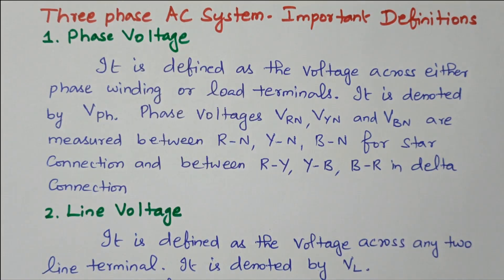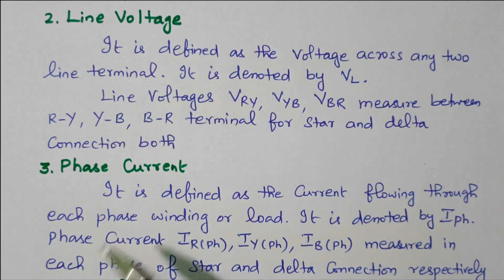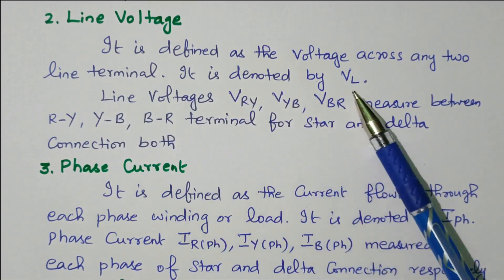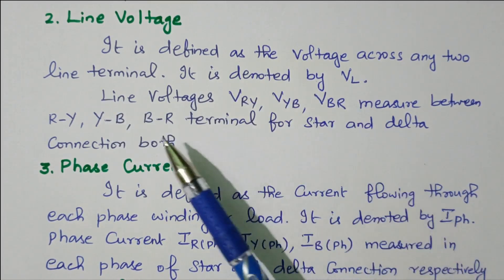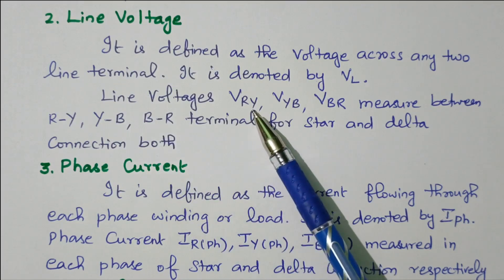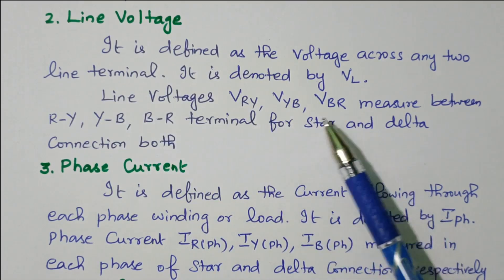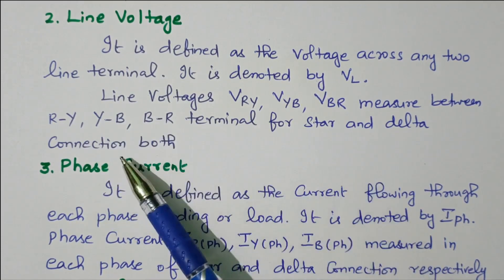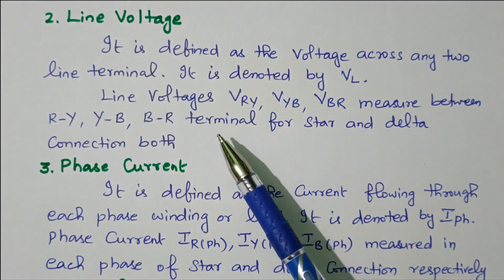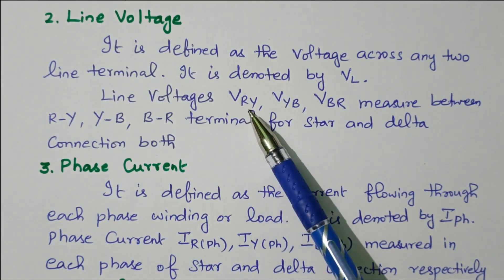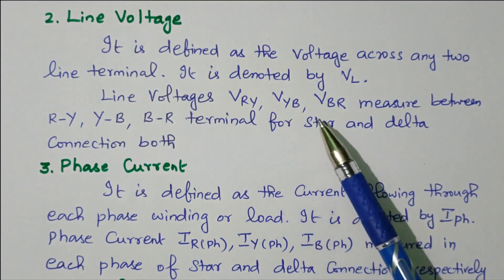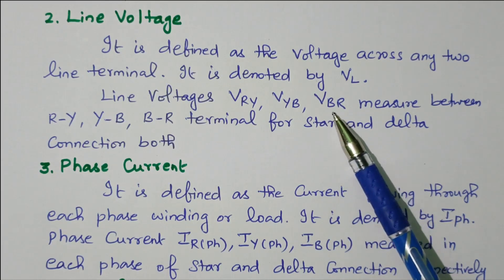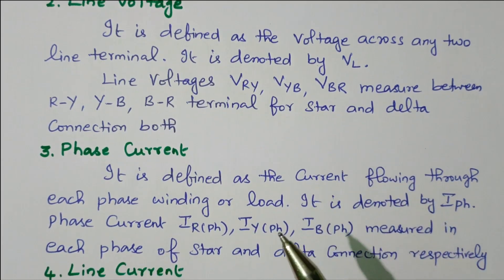Line voltage is defined as the voltage across any two line terminals, denoted VL. The line voltages VRY, VYB, and VBR are measured between RY, YB, and BR for both star connection and delta connection.